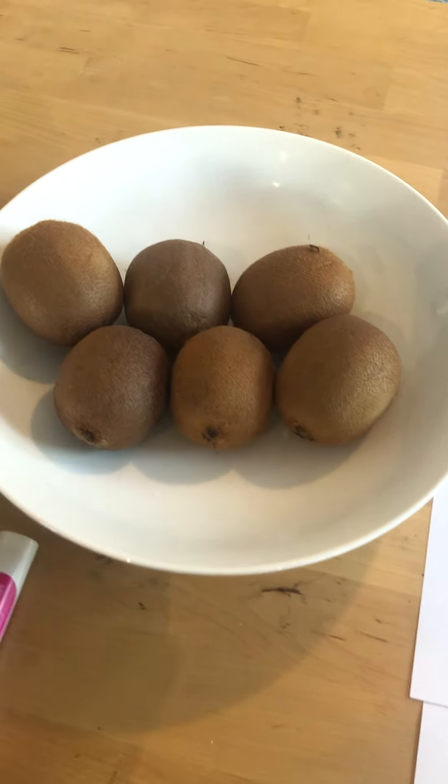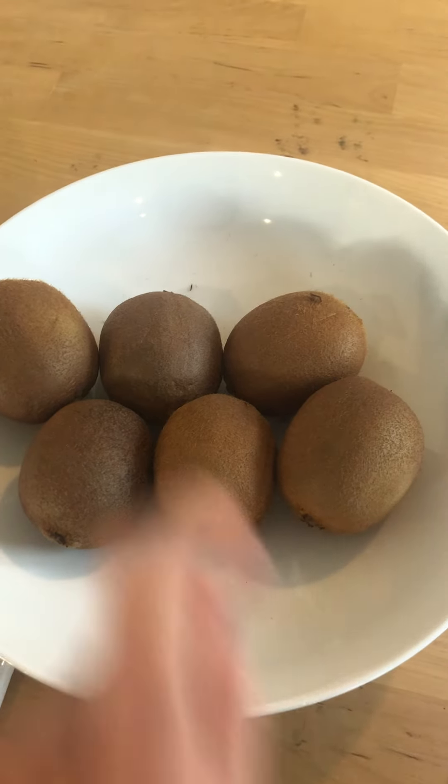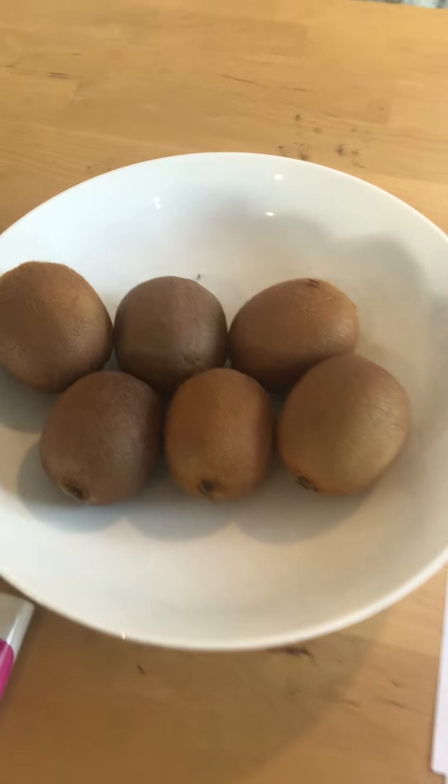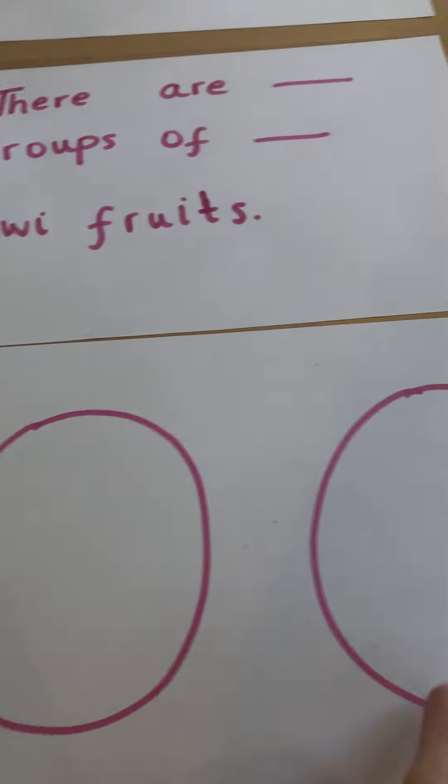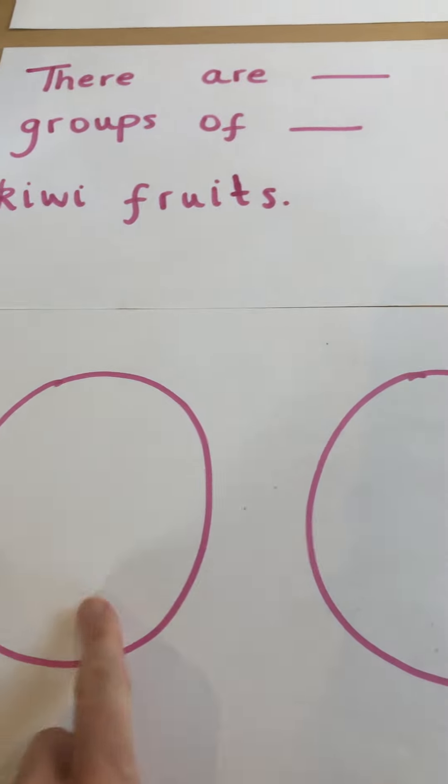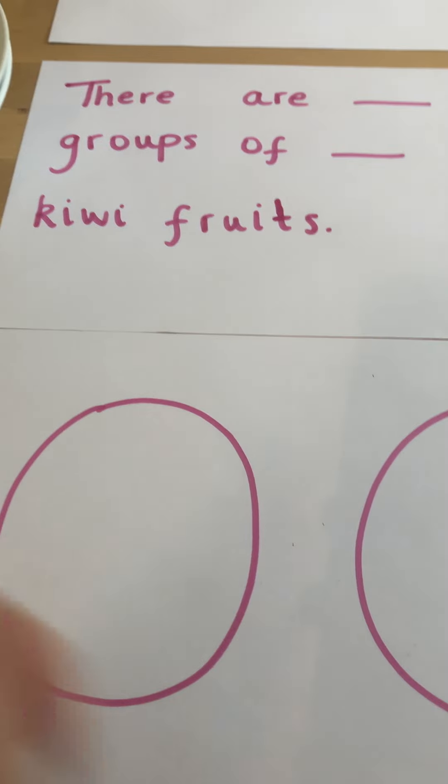We're going to share some more objects. In my bowl I've got six kiwi fruits. I'm going to share them into two equal groups, so I've got my sharing circles ready and I'm going to count as I go.